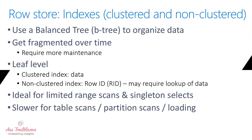When you create a cluster index on a table, data rows are sorted and stored based on their key values or the columns included in the index definition. As you can imagine, the data can only be sorted in one way — you can have only one cluster index per table. In this case, the table is called a clustered table.